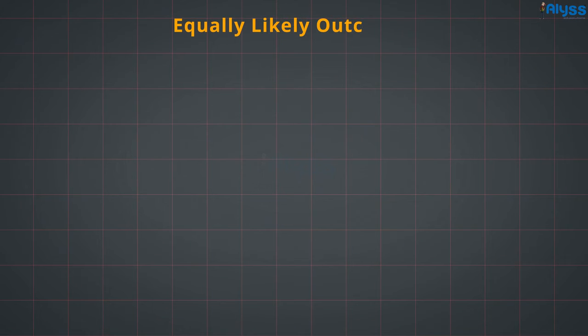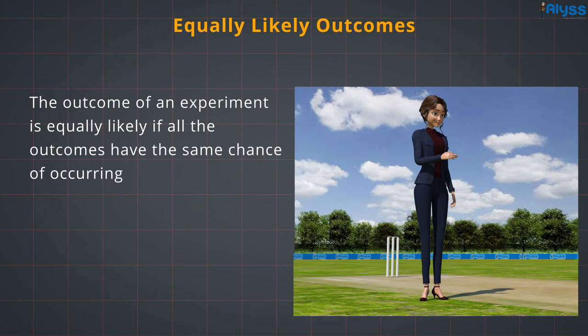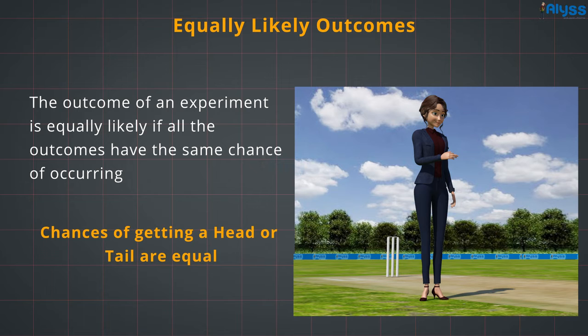Equally likely outcomes. The outcome of an experiment is equally likely if all the outcomes have the same chance of occurring. If we toss a coin, chances of getting a head or tail are equal. Hence, getting a head or tail are equally likely outcomes.